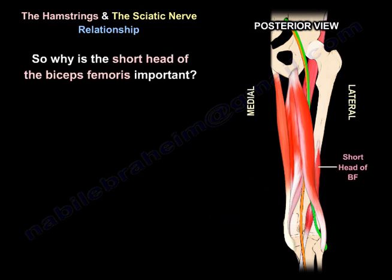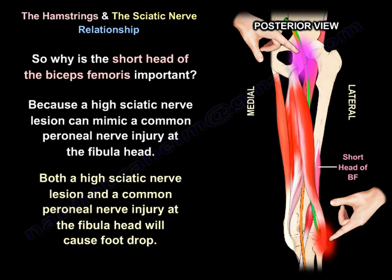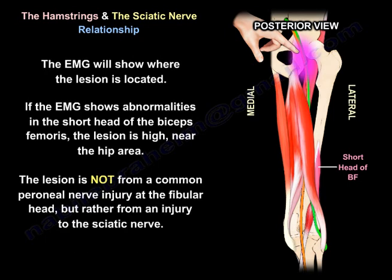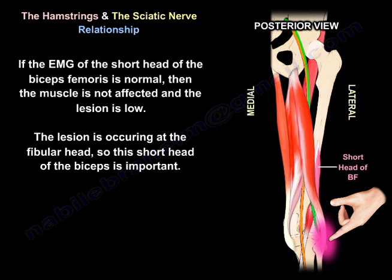Why is the short head of the biceps important? Because a high sciatic nerve lesion can mimic a common peroneal nerve injury at the fibular head — both will have foot drop. But the EMG will show where the lesion is located. If the EMG shows abnormalities in the short head of the biceps femoris, then the lesion is high, near the hip area, indicating injury to the sciatic nerve rather than the common peroneal nerve at the fibular head. If the EMG of the short head of the biceps is normal, then the lesion is low — it occurs at the fibular head. So this short head of the biceps is clinically very important.